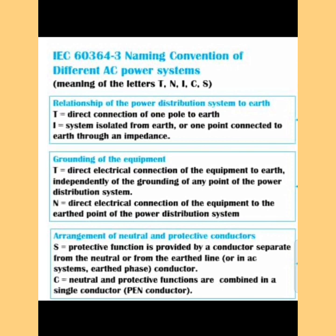Apart from that, sometimes a third letter is present that describes the arrangement of the neutral and protective conductor. S means the protective function is provided by conductors separate from the neutral or from the earth line. C means neutral and protective functions are combined in a single conductor, called the Protective Earth Neutral conductor — PEN.